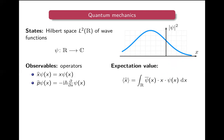Now the state space is very different, and observables correspond to operators. Position is now an operator x-hat, which in this representation is just multiplication by x. The momentum operator corresponds to the derivative: minus the imaginary unit times ℏ times the derivative with respect to x. This ℏ is Planck's constant, which will come up again later.